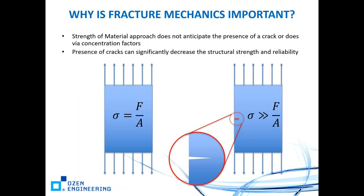Why is fracture mechanics important? The strength of materials approach does not anticipate the presence of a crack in the material. According to strength of materials, the stress in a panel is sigma = F/A. But if we put a small crack in that panel, the stress goes up drastically right at the crack tip. Strength of materials cannot address this situation — the presence of cracks can significantly decrease structural strength and reliability.